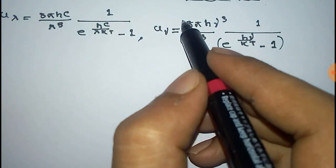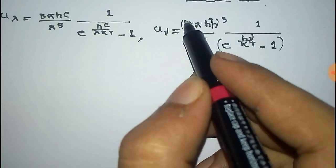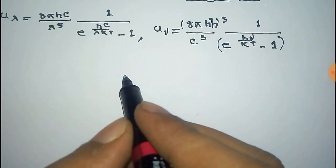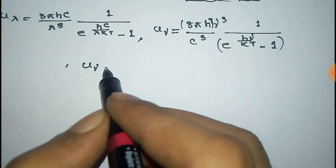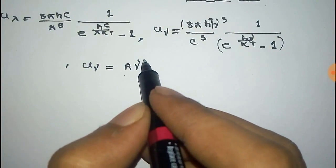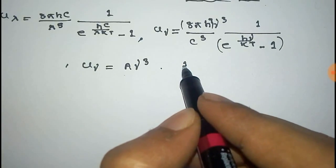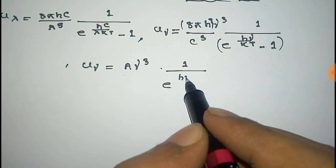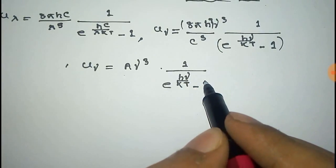Now, we take the constant part (8πh/c³) as a new constant A, so this becomes U_ν = A·ν³ · (1 / (e^(hν/kT) − 1)).